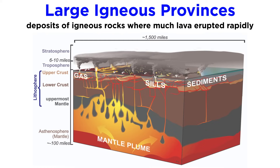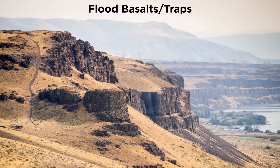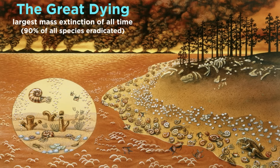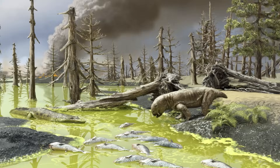Large igneous provinces are massive deposits of igneous rocks, where in some cases millions of cubic kilometers of lava have been erupted in a very short amount of time geologically speaking, with the bulk of the magmatism occurring in less than one million years. One type of LIP, called flood basalts or traps, are large igneous plateaus with a step-like morphology, and are associated with many of Earth's worst mass extinctions. For example, the Siberian Traps are often cited as being the triggering event of the end-Permian mass extinction, which was the worst mass extinction of all time.